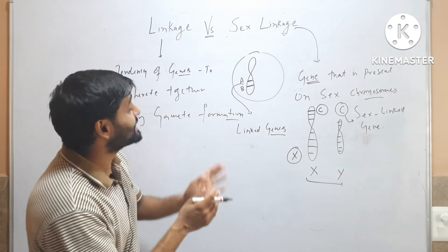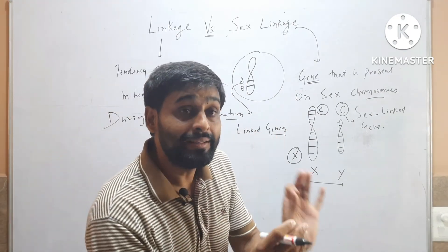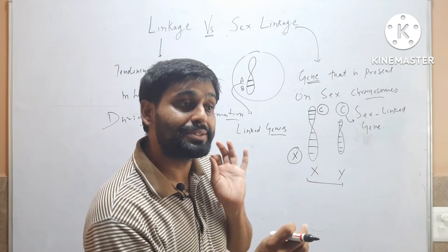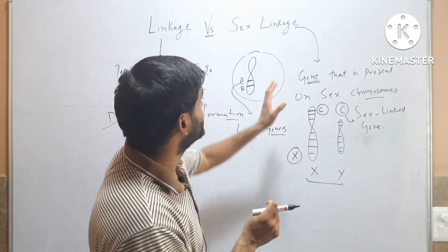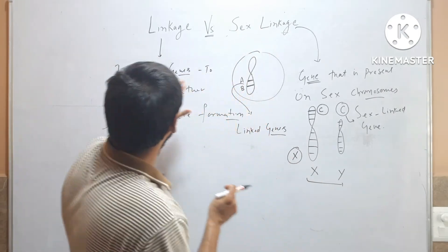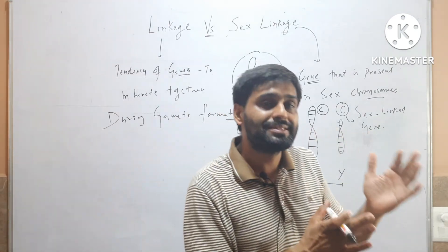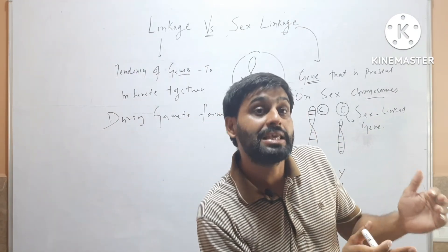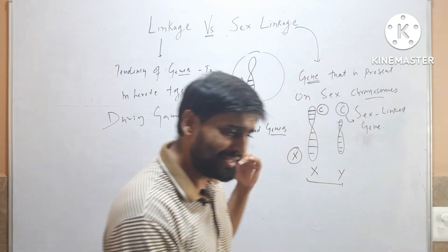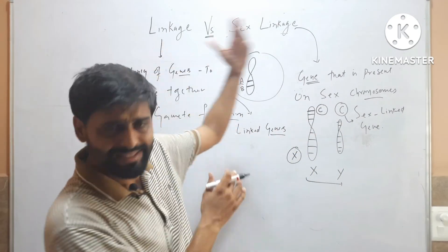Sex linkage is when any gene that is present on a sex chromosome — then it will be called a sex linked gene. And linkage is when genes are present on the same chromosome and they are inherited together. So this is the difference between linkage and sex linkage.